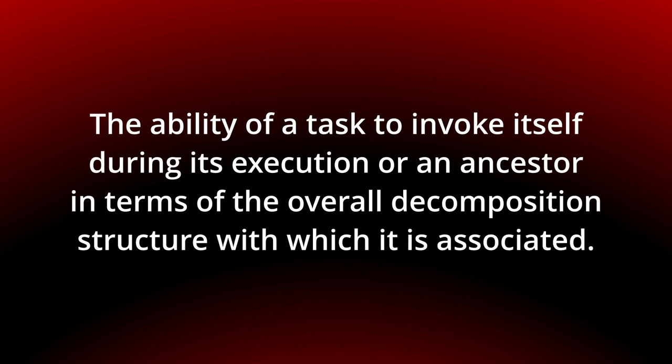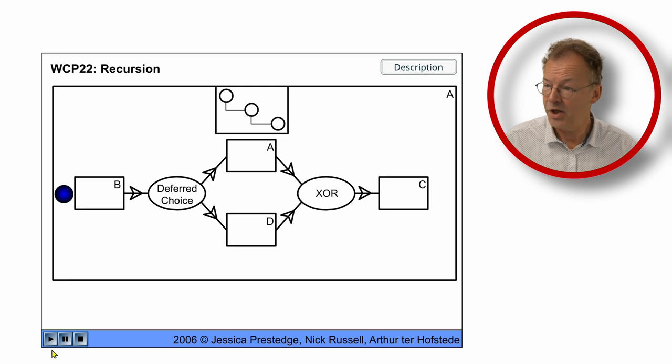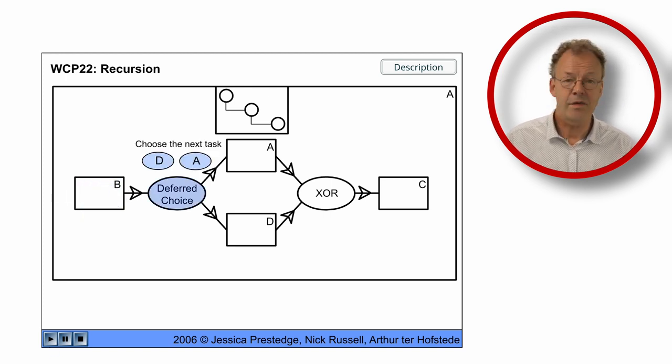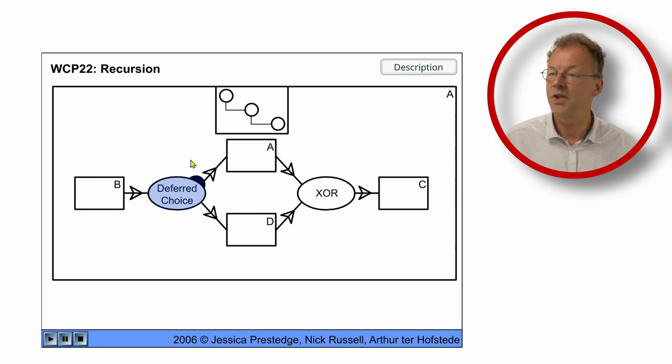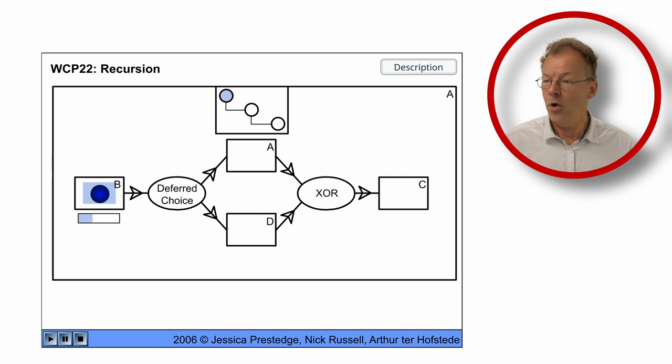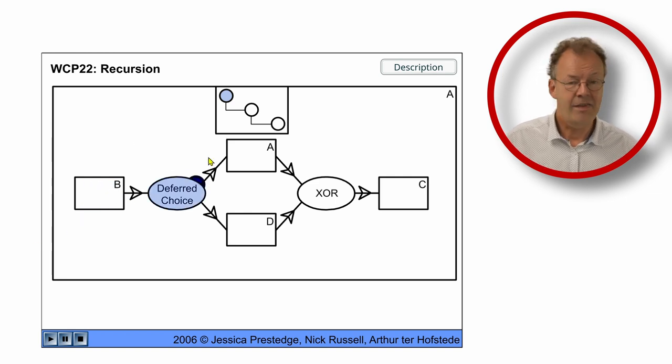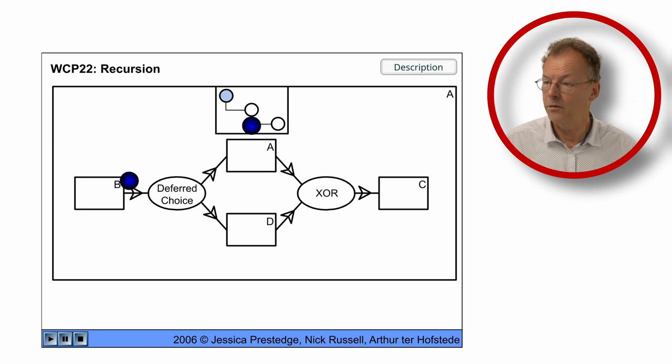You can see the behavior in the original flash animation. We first complete B and then we have a deferred choice and we choose A. And then there is this first level of recursion now. So we choose A again and then we get a second level of recursion.